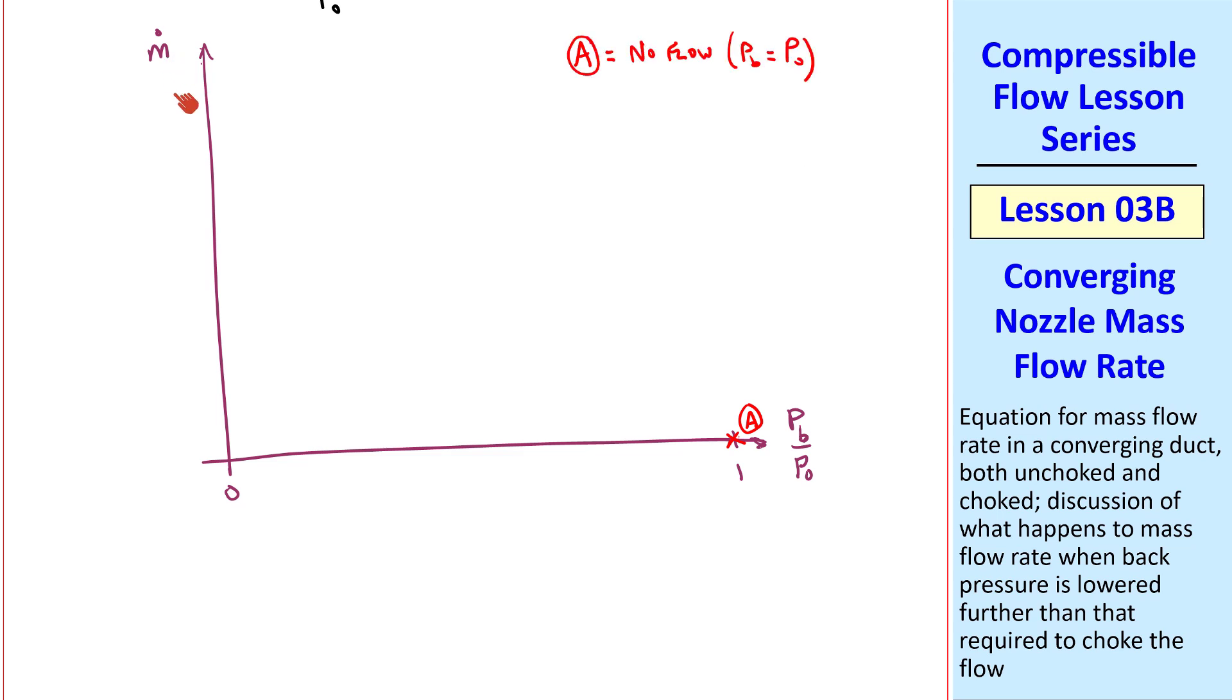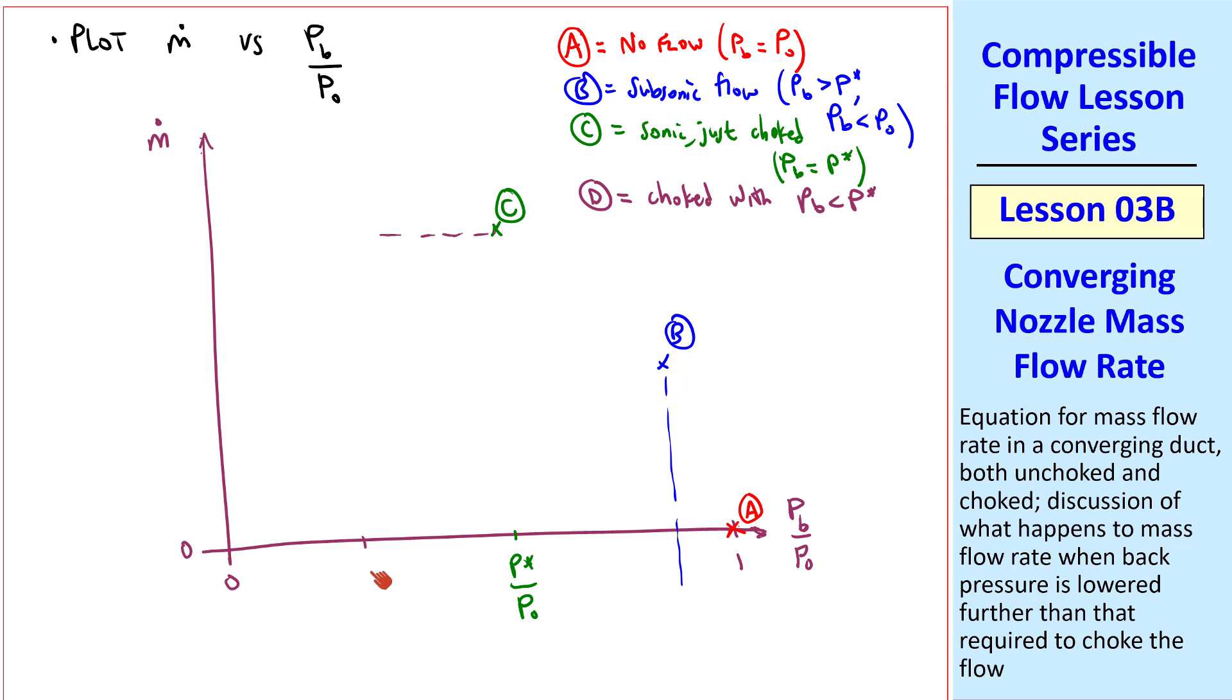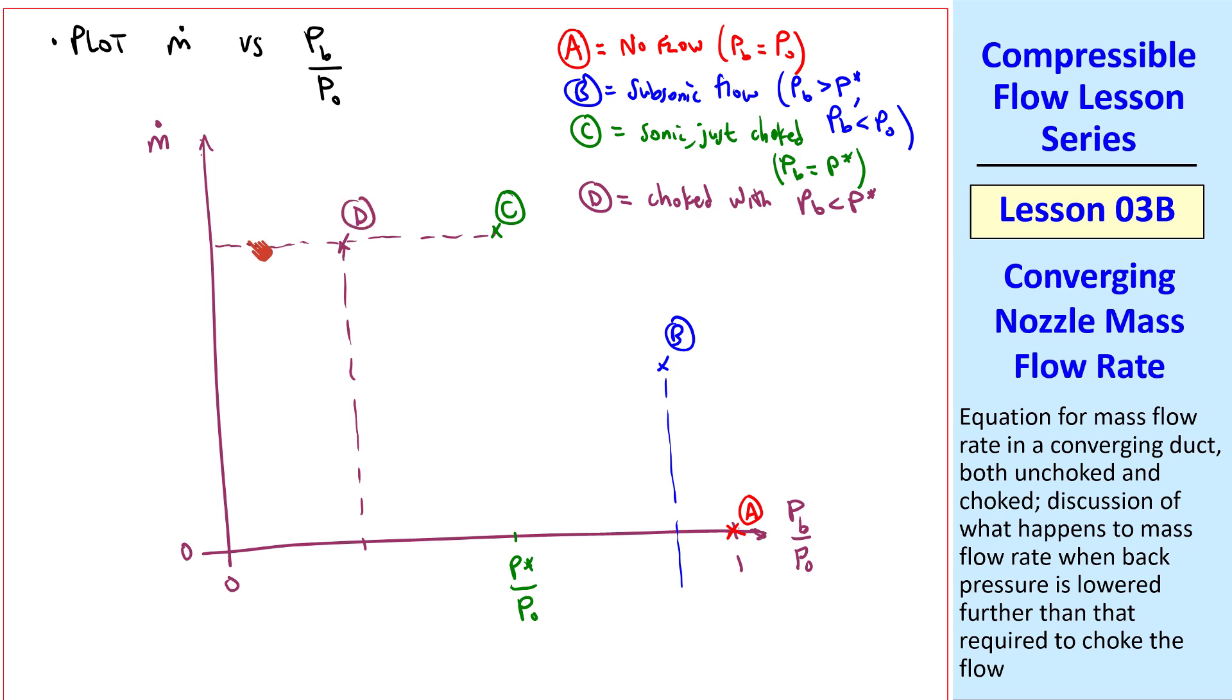Case A is when P_B equals P₀, and I'll make a list of these up here. This means there's no flow. Thus m-dot is zero. Case B is the case of subsonic flow where P_B is greater than P*, but P_B is less than P₀, somewhere here, and there will be a non-zero mass flow rate. We'll let C be the sonic, just choked condition, where P_B equals P*. While P* will be somewhere here, P*/P₀, recall is about 0.5283 for air, and this point will be up here. I'll move these up to make room for the other two. Namely D is the choked case with P_B less than P*, somewhere here. But once the flow is choked, m-dot no longer changes. So point D will be here, and we'll have the same mass flow rate as C.